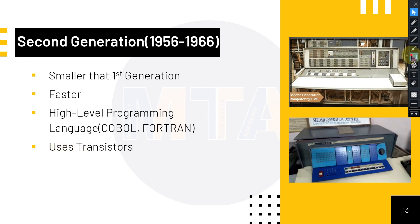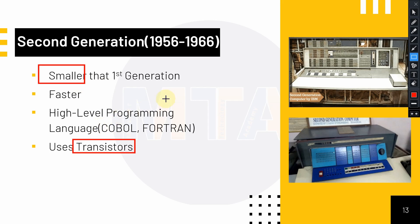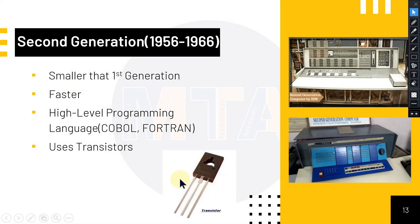What made the second generation computer smaller than the first was the use of transistors. They replaced vacuum tubes with transistors — small, tiny chips used for processing — and this made the computer a little bit smaller than the first generation.